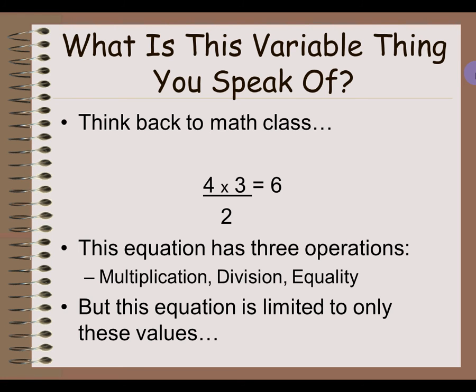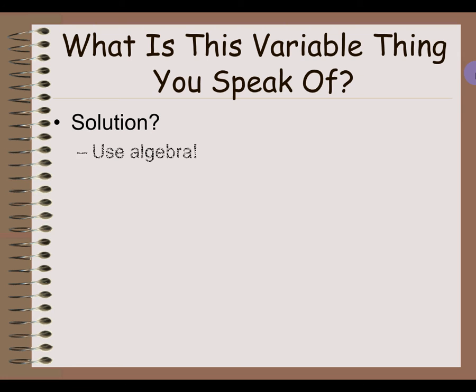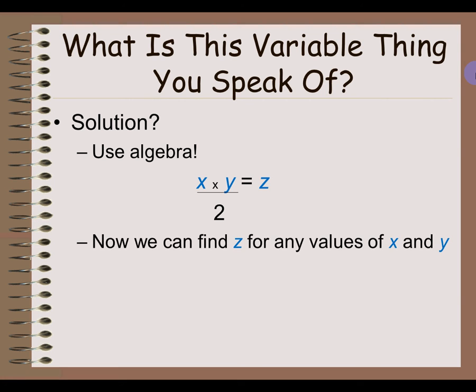If we want to have a more useful equation, we can use algebra and replace those numbers with letters. So now we have x times y divided by 2 is equal to z. This is a much more useful equation because we can now find the value for z by giving any values of x and y. But it's still limited because we have no meaning for what these values are — it's just a bunch of numbers we're calculating together.